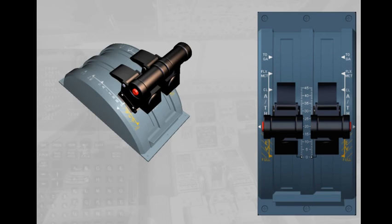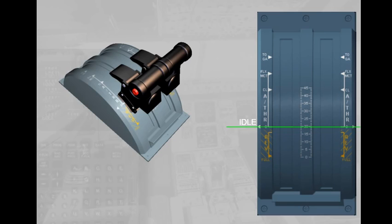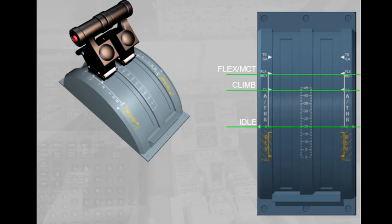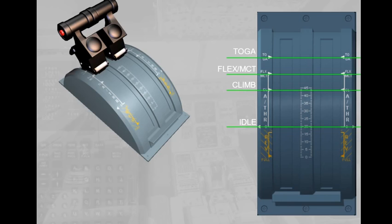When the autothrust is off, the crew controls the thrust as usual by moving the thrust levers over a quadrant. For forward thrust, this quadrant carries four physical detents or stops: Idle, Climb for max climb thrust, Flex/MCT for flex thrust at take-off or max continuous thrust, and TOGA for max take-off or go-around thrust.